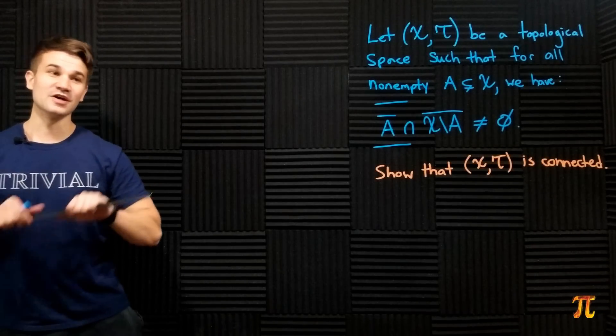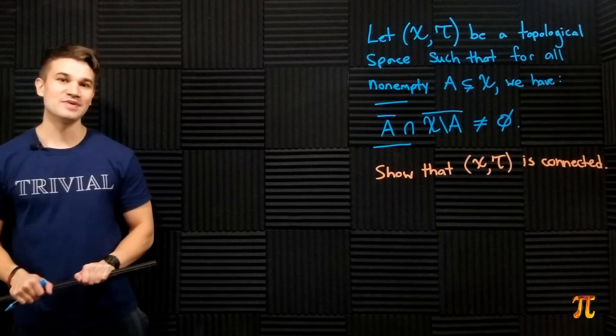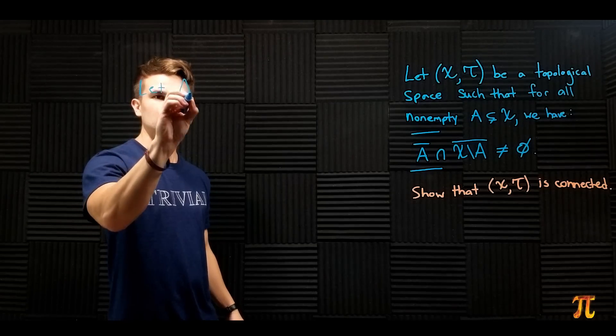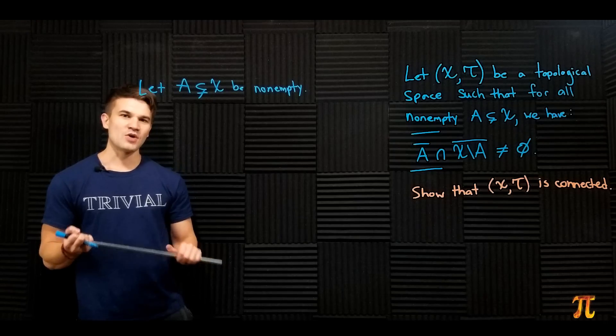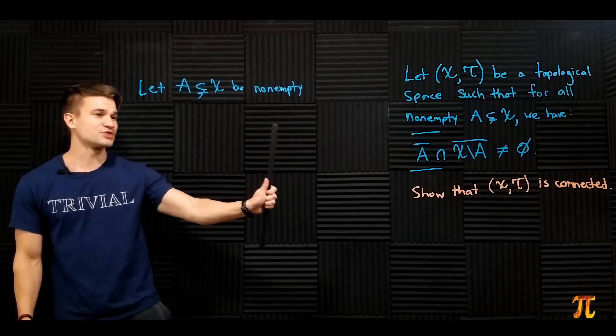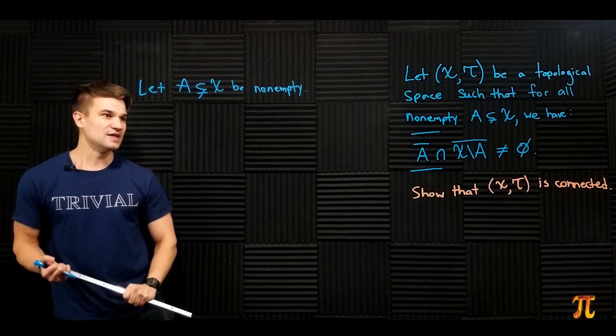Okay, here's my proof of this claim. Let A ⊆ X be non-empty. Now, by assumption, we have that A's closure intersected with the closure of A's complement is non-empty.